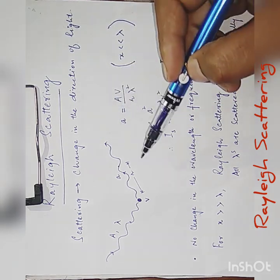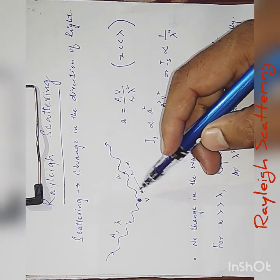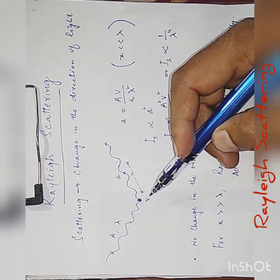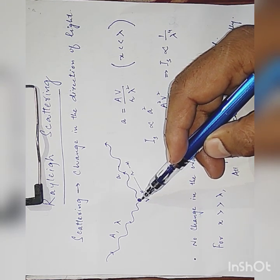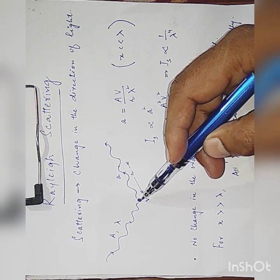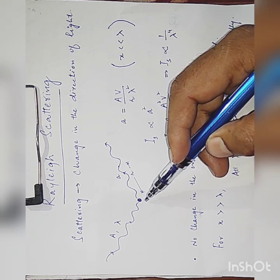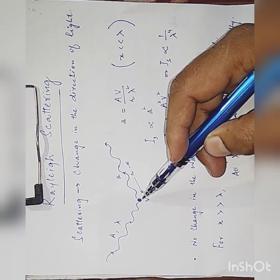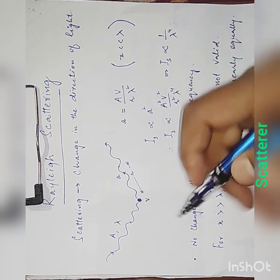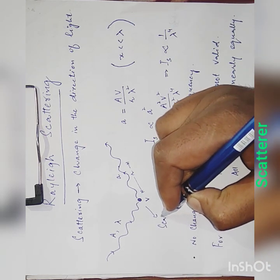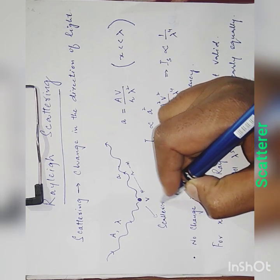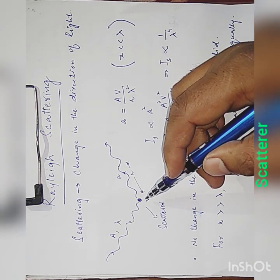Now for Rayleigh scattering, for example, suppose I have a particle — an air molecule, or a dust particle, or any medium molecule. Let that particle's size, or its volume, be V. This particle's other name is 'scatterer' — we can call it a scatterer, because it is responsible for the scattering of incident light.